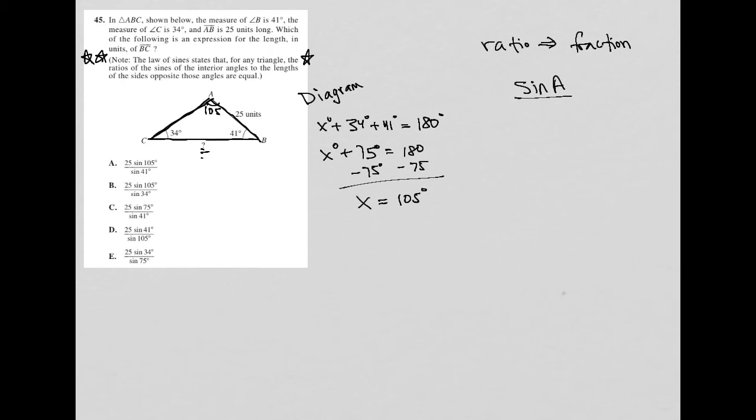The ratio of the sines of the interior angles to the lengths of the sides opposite of those angles. Okay. So that would be sine A over question mark. Are equal. So all the ratios, plural, are equal. So that means that I have sine A over question mark should be equal to sine angle B over AC, let's call it. Should be equal to sine angle C over AB.